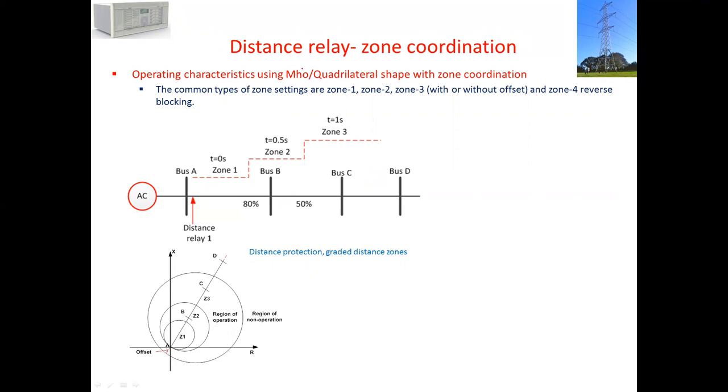If we look at the Mho shapes, the line between A to B is this one. We cover 80%, so around 20% is a gap. Everything within this circle, the relay must operate in zone 1 time, instantaneously. Zone 2 is at 50% of the next line between B to C. Anything within this area, the relay should provide trip time at 0.5 second. Zone 3 is after 50% of line C to D, somewhere around here.